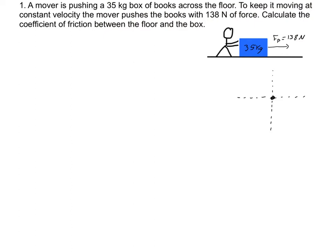First example problem: a mover is pushing a 35 kilogram box across the floor. To keep it moving at a constant velocity — anytime you see the terms 'constant velocity,' go ahead and box that — that tells you your acceleration is 0 meters per second squared. It doesn't matter how fast it's going, 5 or 10 meters per second. If it's going at a constant velocity, acceleration is 0 meters per second squared. The mover pushes with 138 newtons of force, and we're looking for the coefficient of friction, mu.